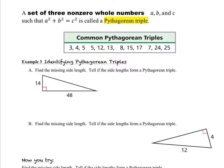A set of three non-zero whole numbers A, B, and C such that A squared plus B squared equals C squared is called a Pythagorean triple. Examples of Pythagorean triples include: 3, 4, 5; 5, 12, 13; 8, 15, 17; and 7, 24, 25. You may see some of these combinations in triangle questions we work on, so just be on the lookout. If not, of course, we can always figure it out.